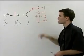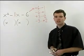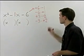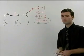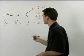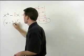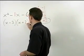So which pair of factors adds to negative 1? The negative 3 and the positive 2. So our answer is X minus 3, X plus 2.